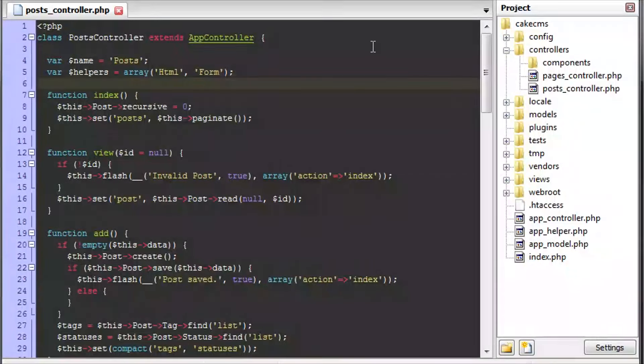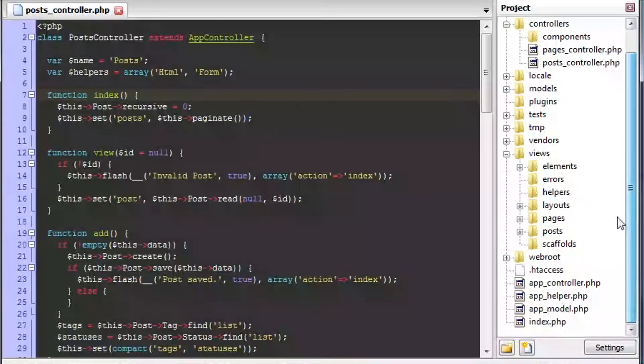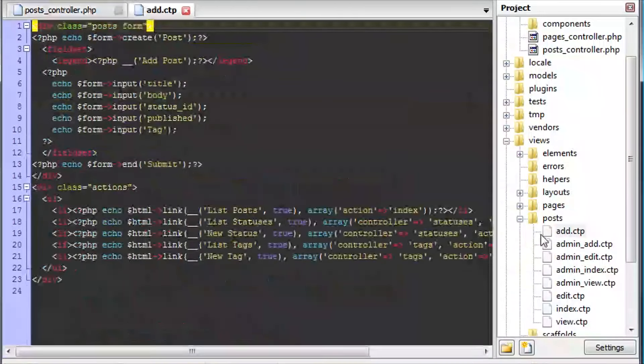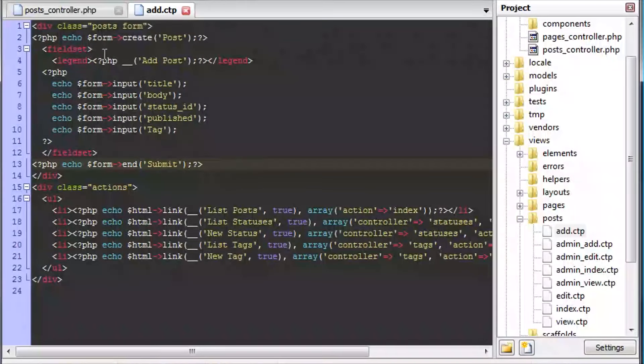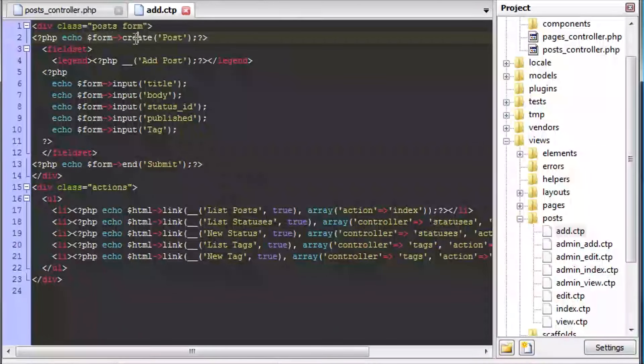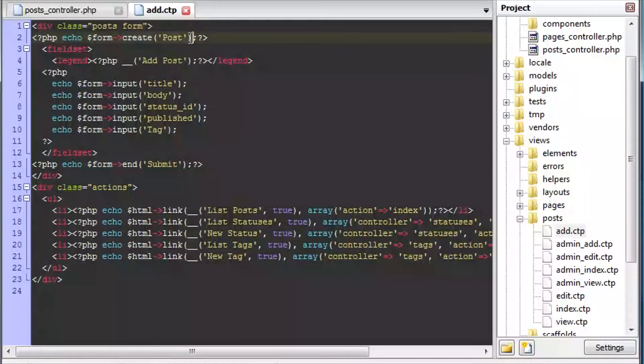So now our controller can use this equipment inside his view. So if we go into views, posts, and we go into the add CTP or the cake view template there, you can see that he's using the form helper to create a form for post. That's the start of the form. And you can see that he's ending the form there. He's also using it to create input boxes for the form.